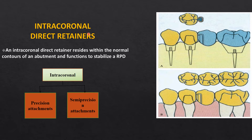Intra-coronal direct retainers are precision or semi-precision attachments incorporated within the contour of a tooth. There is a male portion attached to the crown and a female portion incorporated into the cast partial framework. The male part is known as a tenon and the female part as a mortise. These are very precisely fitting parts manufactured by machining titanium alloy, nickel-chromium, or cobalt-chromium alloys, and they offer excellent stability and good retention.